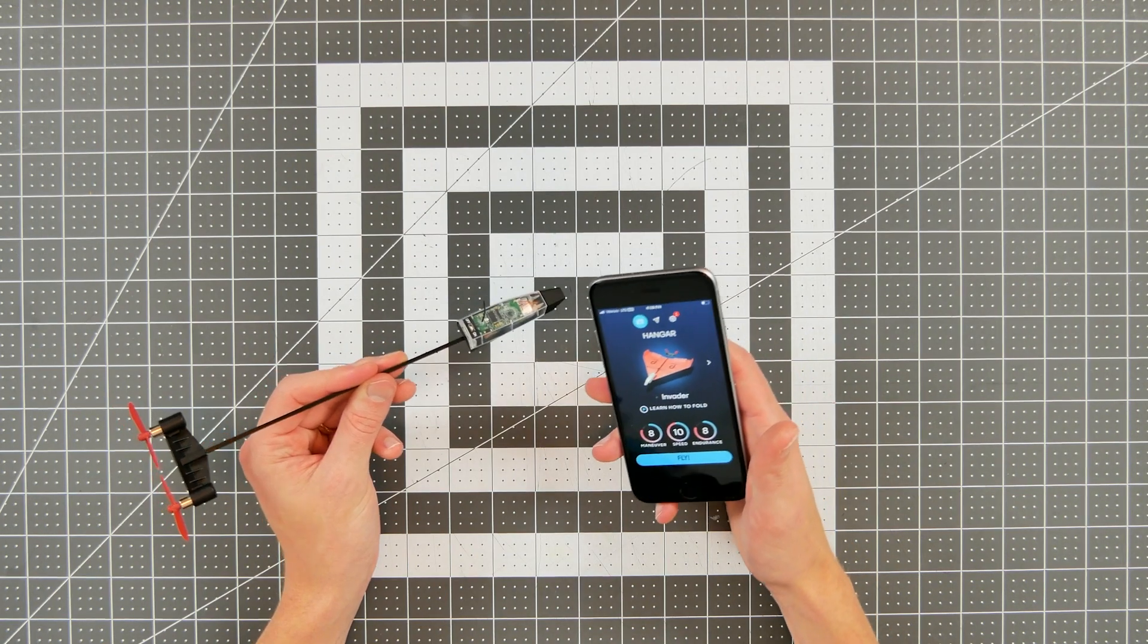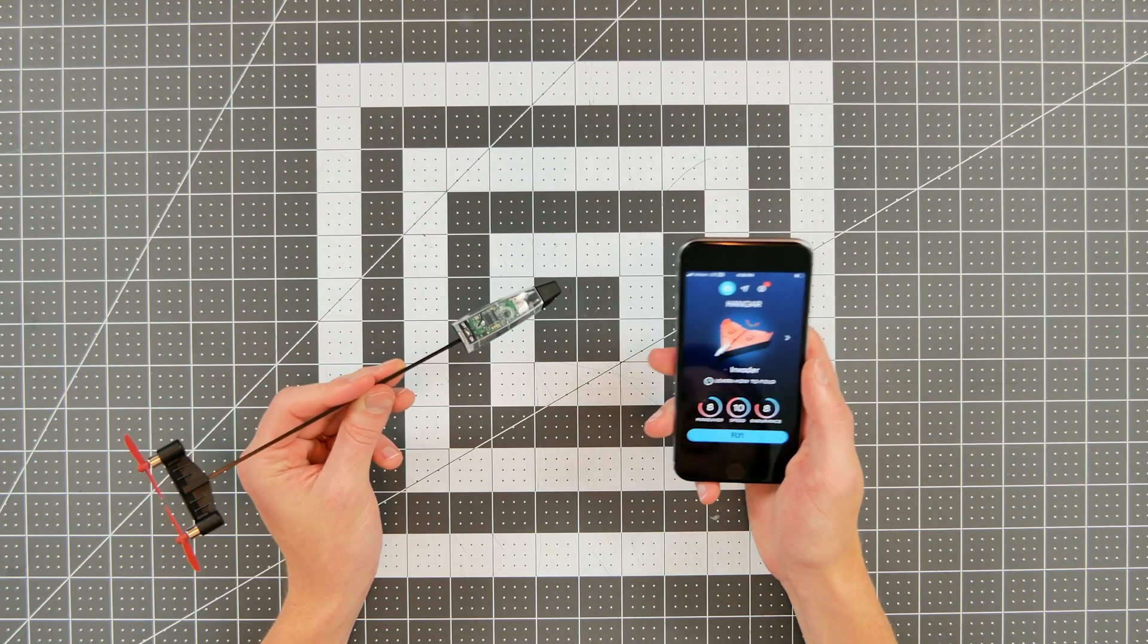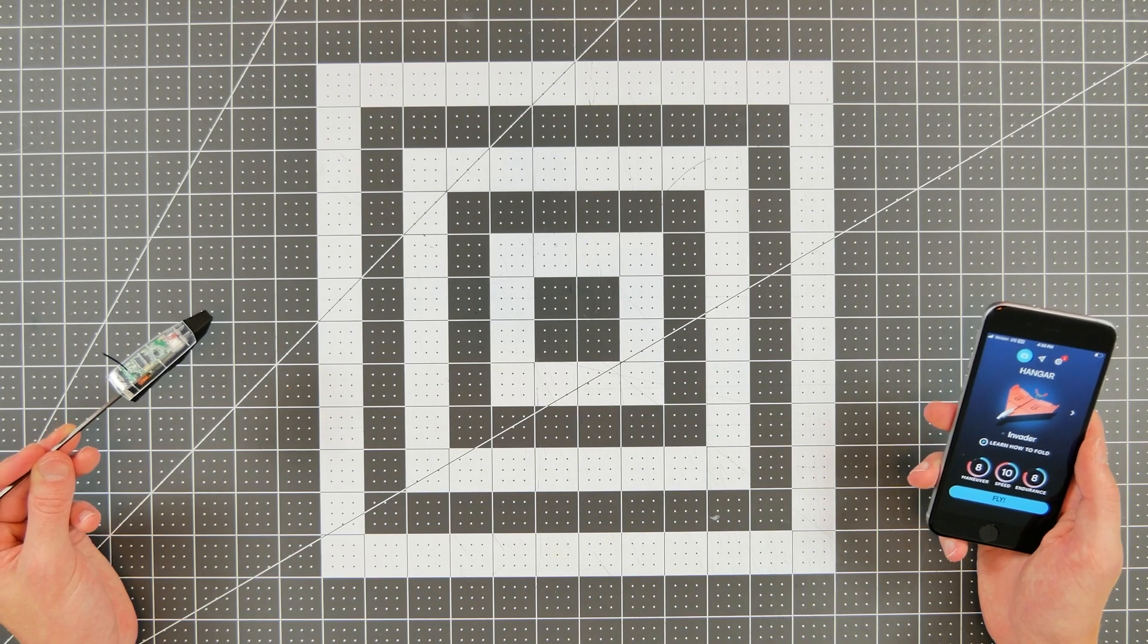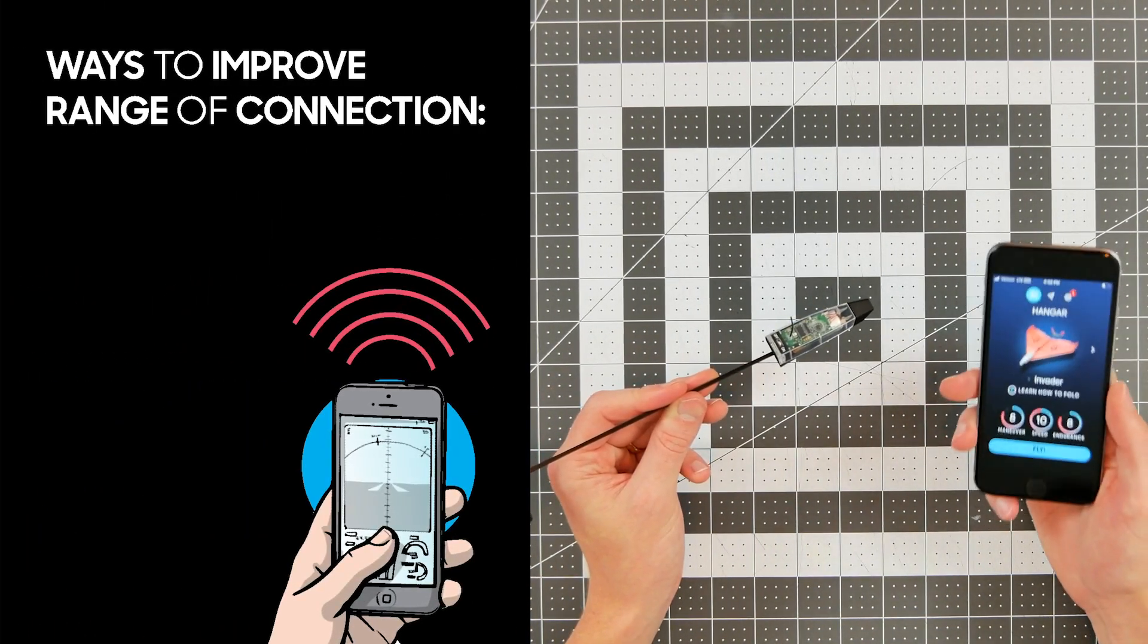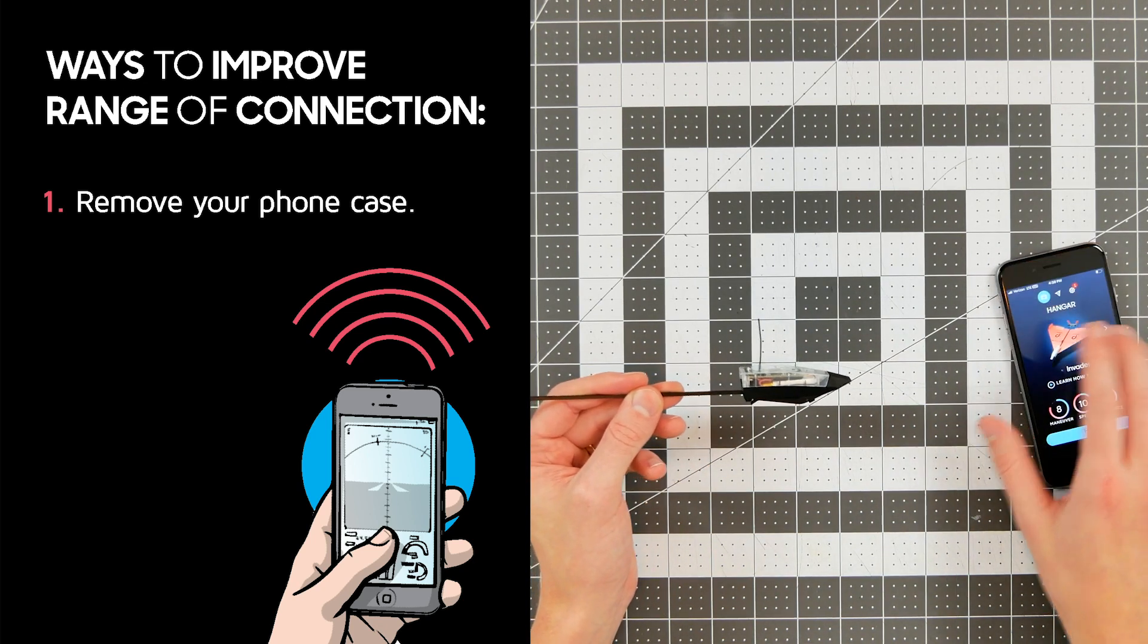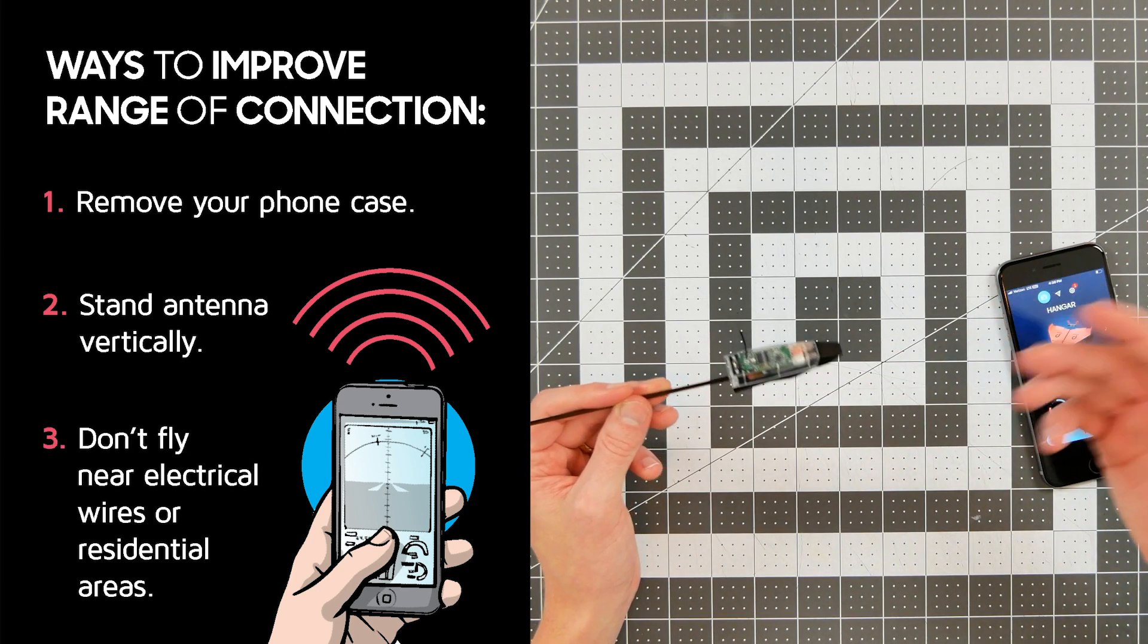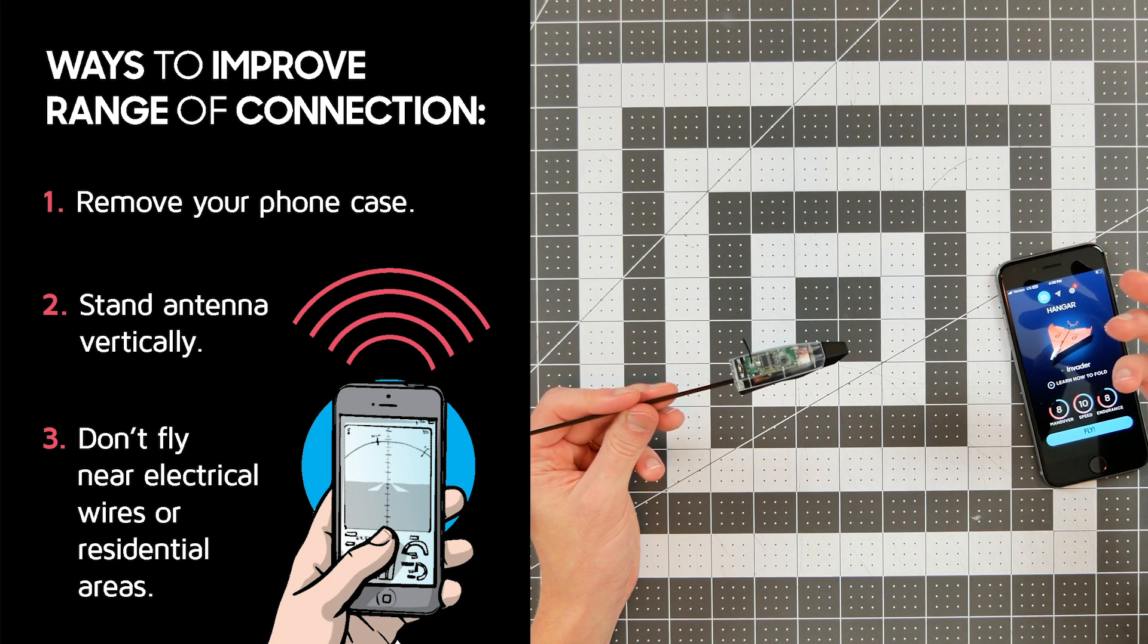Now while we're talking about the connection between your module and your phone, an important topic to discuss is the range of that connection. And that's basically the point at which your module can no longer effectively receive commands from your phone. And there are a few ways to increase that range. One very easy one is to remove your phone case. Another very easy one is to make sure that this antenna is standing vertically. And then a third one is to avoid flying in areas with electrical wires or in residential areas that have a lot of Wi-Fi or Bluetooth interference.